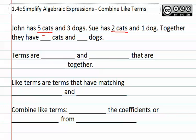Together, they would have seven cats. In the second portion, we can see that John has three dogs and Sue has one dog. Together, we would add them and see that they had a total of four dogs.